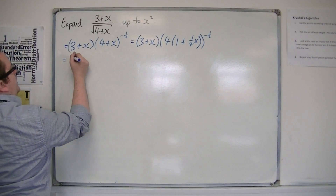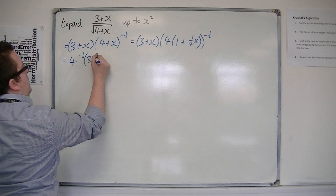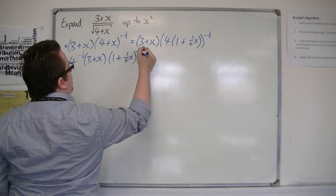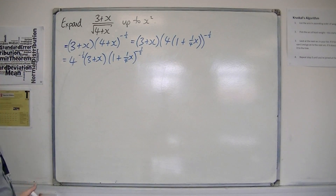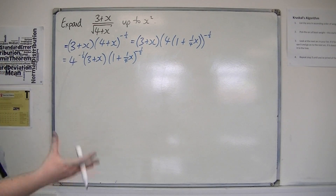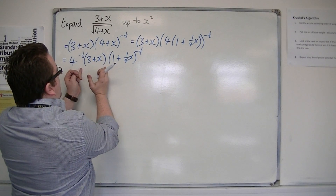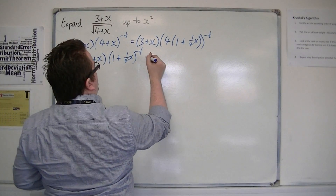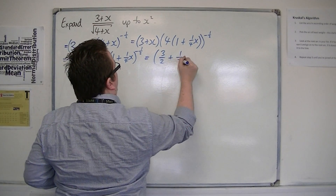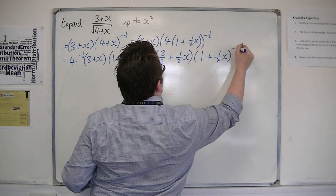I can take that 4 outside. So I'm going to have 4 to the minus a half, times (3 + x), times (1 + x/4) to the minus a half. Now, 4 to the minus a half is 1 over 4 to the half, so 1 over 2 — one half. And I'm going to multiply that by the (3 + x). So we're going to have (3/2 + x/2) times (1 + x/4) to the minus a half.